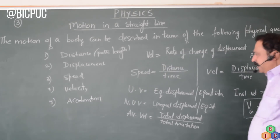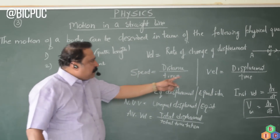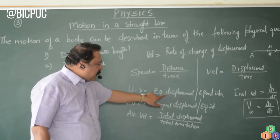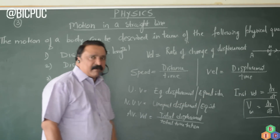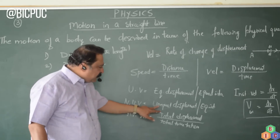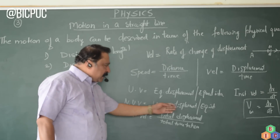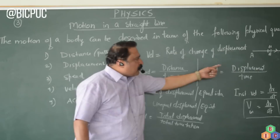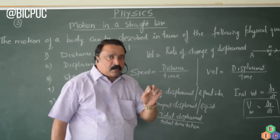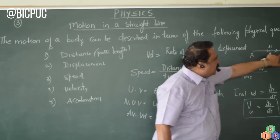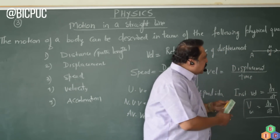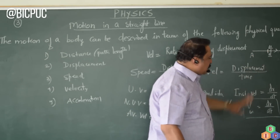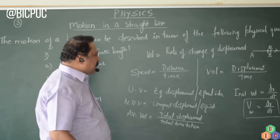To summarize velocity: velocity is displacement divided by time, or rate of change of displacement. The four types are: uniform velocity (equal displacement in equal intervals of time), non-uniform or variable velocity (unequal displacement in equal intervals of time, or equal displacement in unequal intervals of time), average velocity (total displacement by total time), and instantaneous velocity (dx by dt, the small displacement dx covered in small time dt).